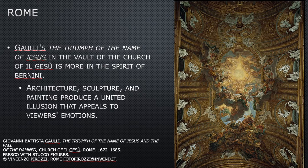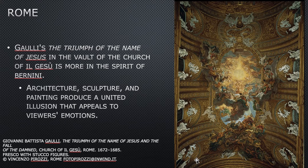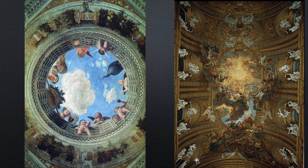It's very much in the spirit of Bernini — architecture, sculpture, and painting produce a united illusion that appeals to viewers' emotions. This is the imagined hole; all of this is painted on a flat ceiling, but there are real sculptures stuck on as well, so there's both real and fake. This is just to remind you of where this whole idea of an illusion of a hole in the ceiling came from — it started with this earlier artist and his simple little skylight in the Camera Picta.